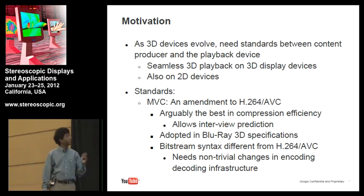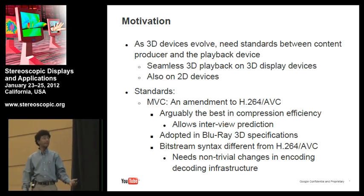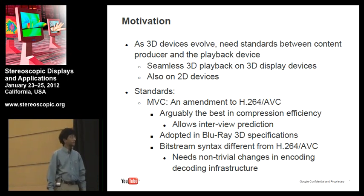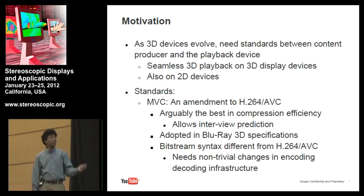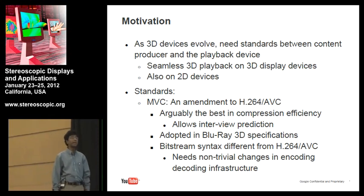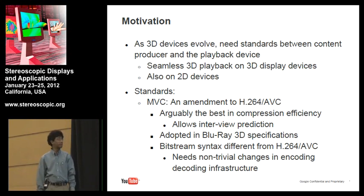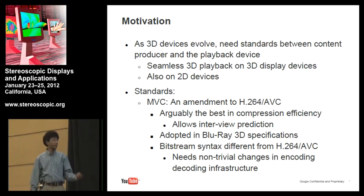In terms of standards for 3D, there's only one that is out there now, which is MVC — an amendment to H.264 AVC. It's probably the best in compression efficiency because it allows inter-view prediction as opposed to only temporal predictions. It's also adopted in the Blu-ray 3D specs. Although it's an amendment to H.264 AVC, the bitstream syntax is somewhat different from regular H.264 AVC, which means it requires non-trivial changes to the encoding and decoding infrastructure.